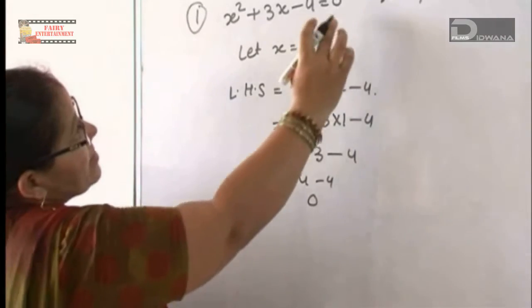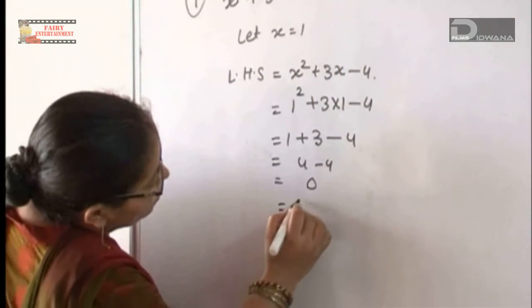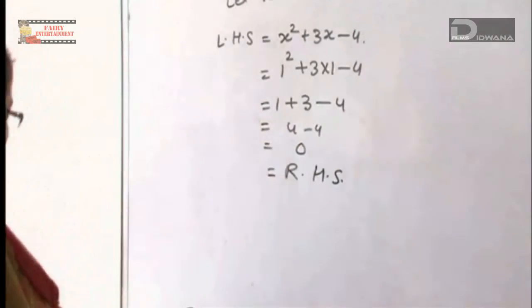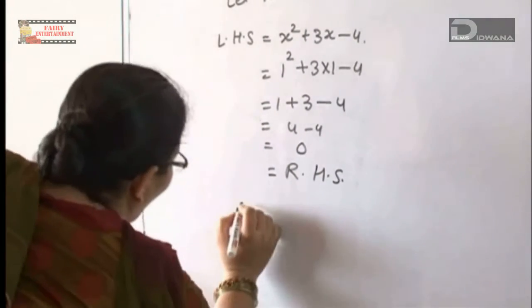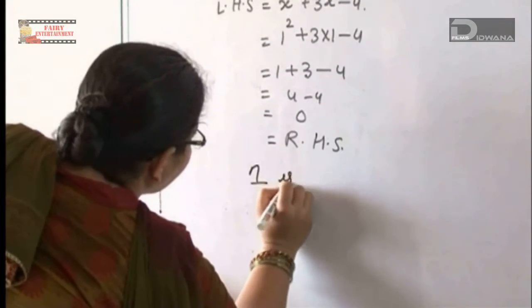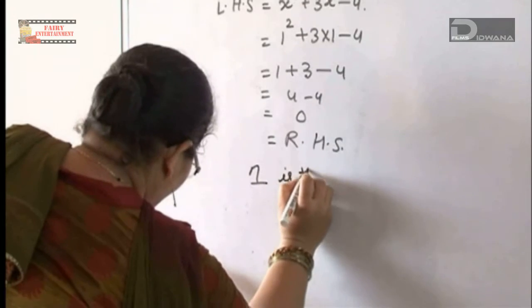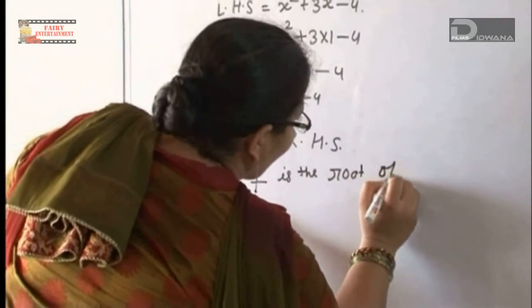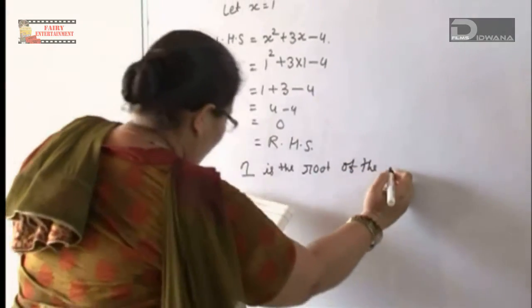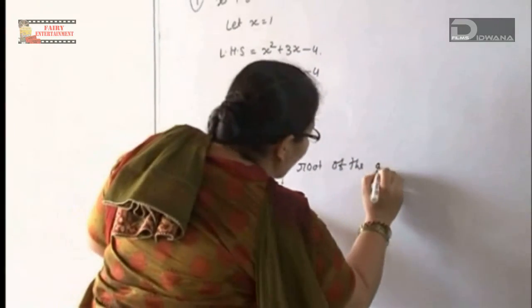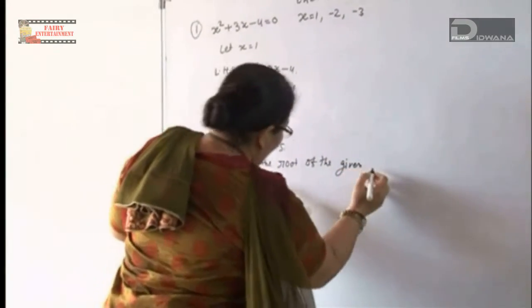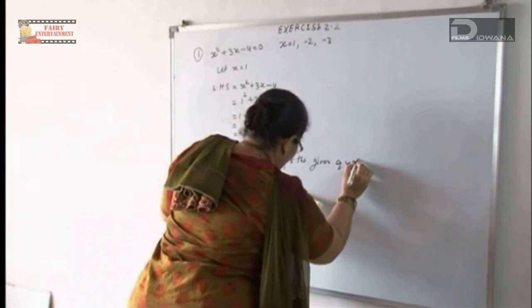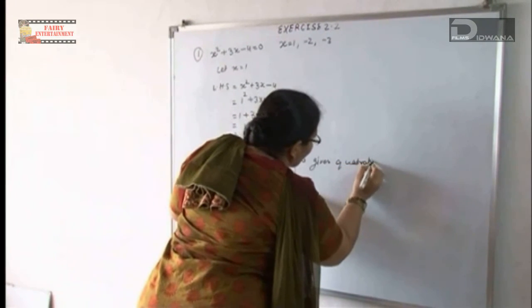So the right hand side is always 0. The left hand side equals the right hand side. Therefore, 1 is the root of the given quadratic equation.